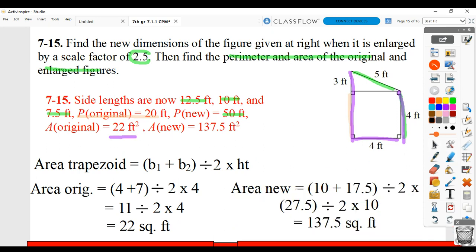For the new, you're taking your new dimensions, which would be 10 plus 17.5 divided by 2 times the new perpendicular height, which is 10. And you end up getting 137.5 square feet. So that's where that value came from.